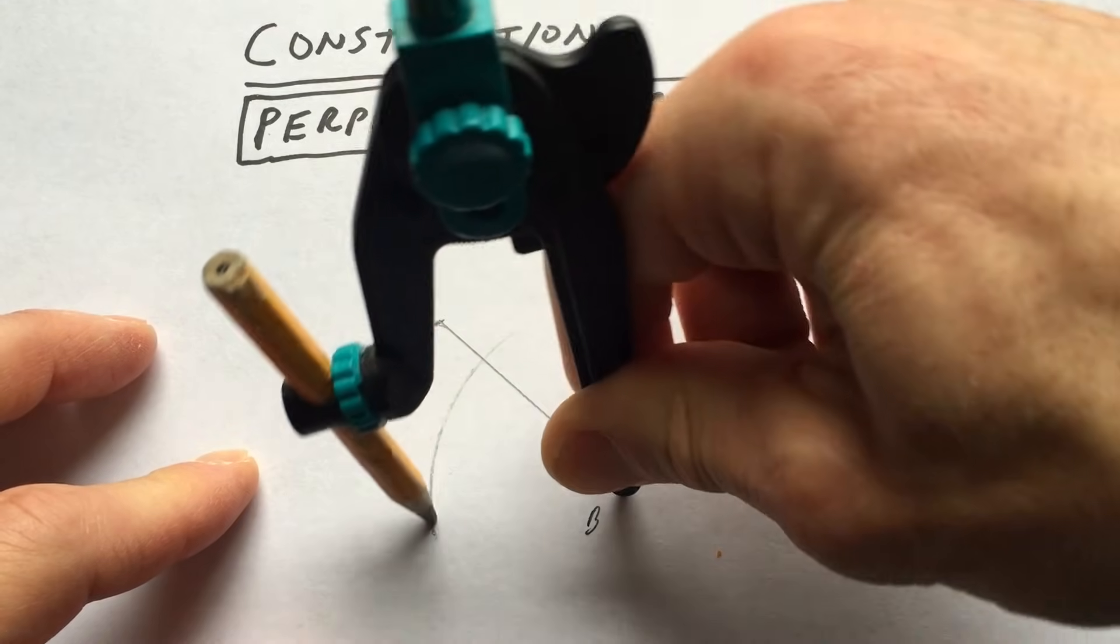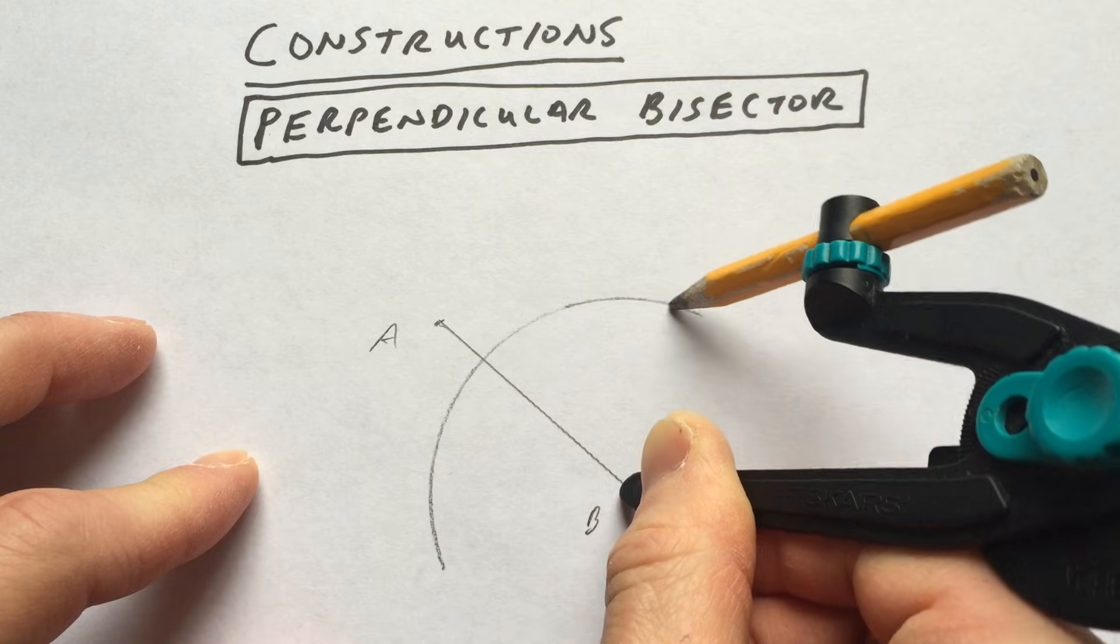Some students will just make a continuous arc like that, but you can separate the two arcs.